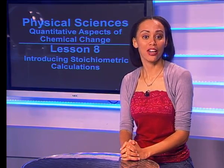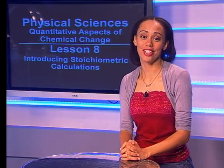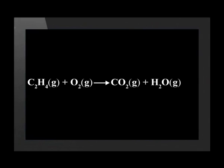Follow the next example and you will see that it is very easy to do. Consider this chemical equation. The reactants on the left hand side of this equation are ethene with the formula C2H4, which reacts with oxygen.